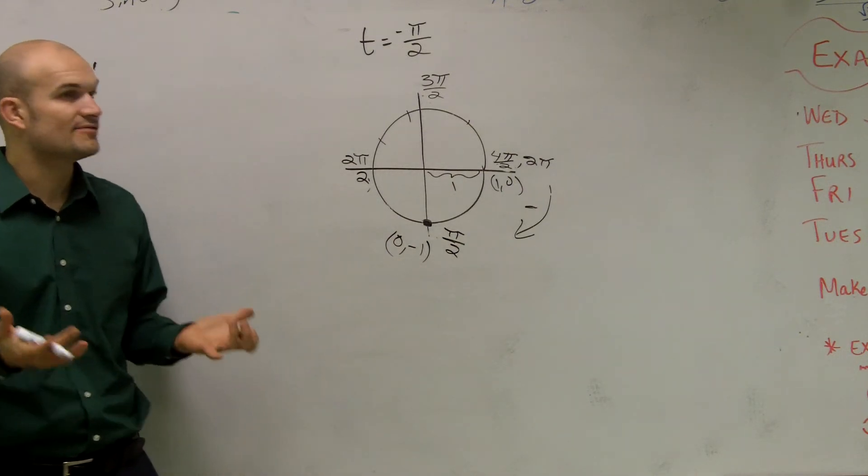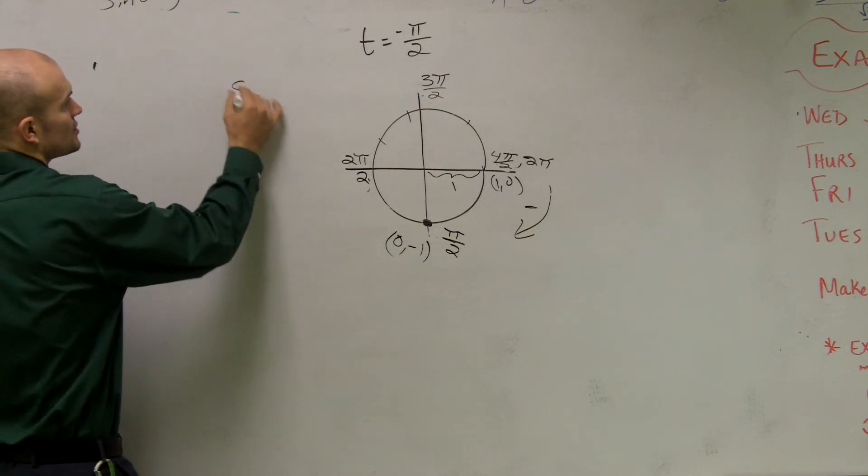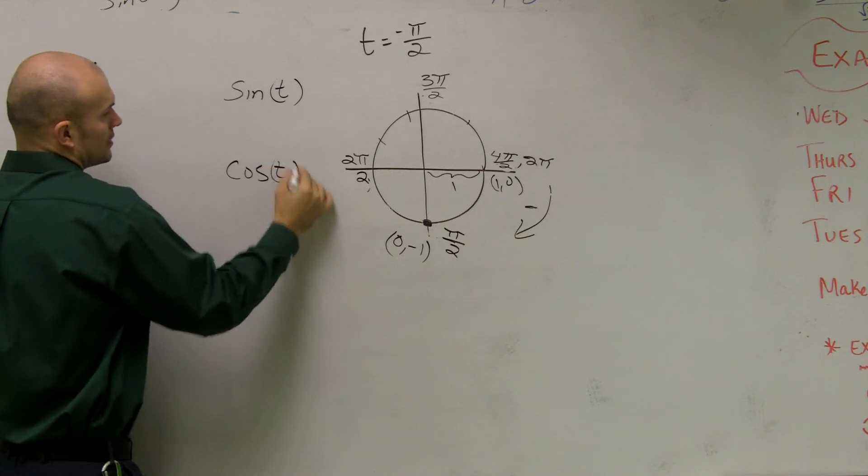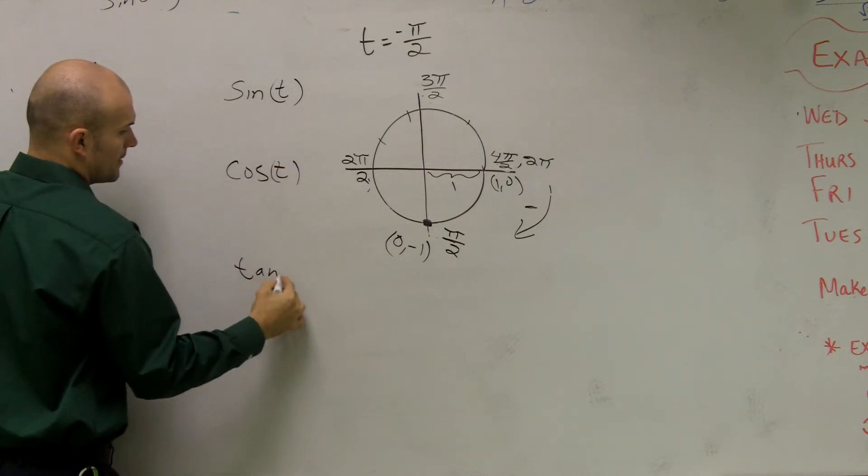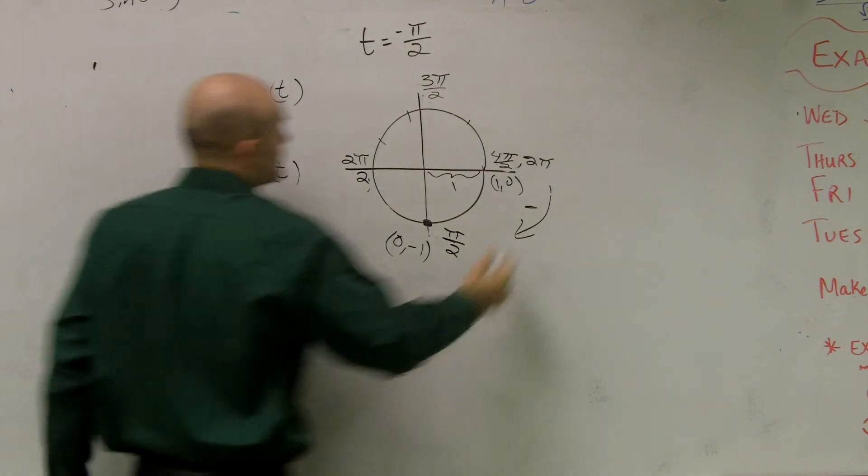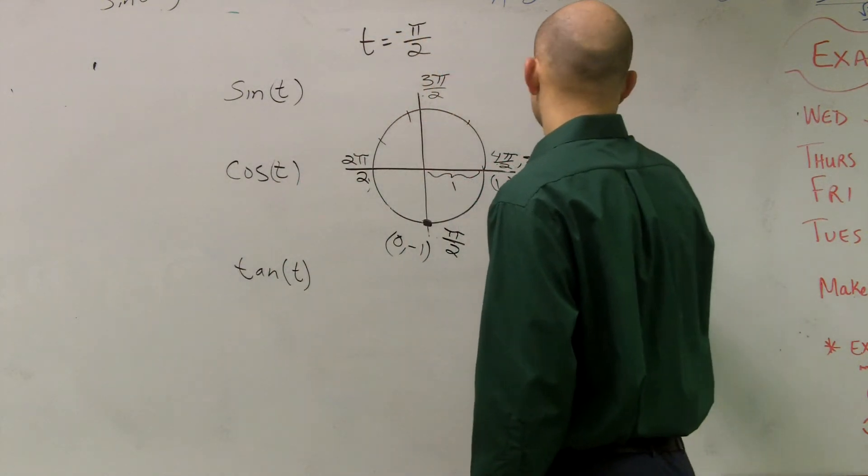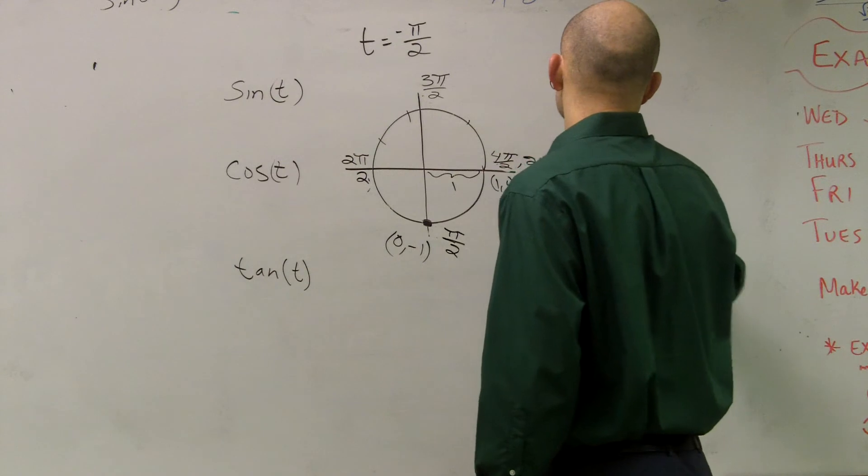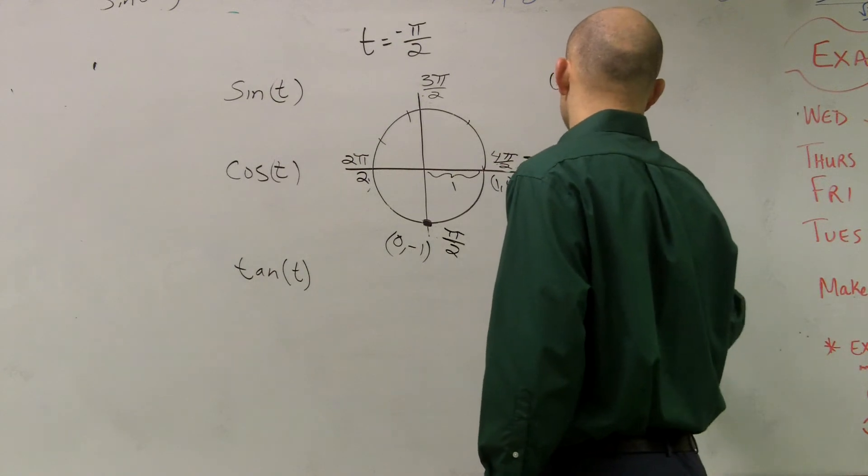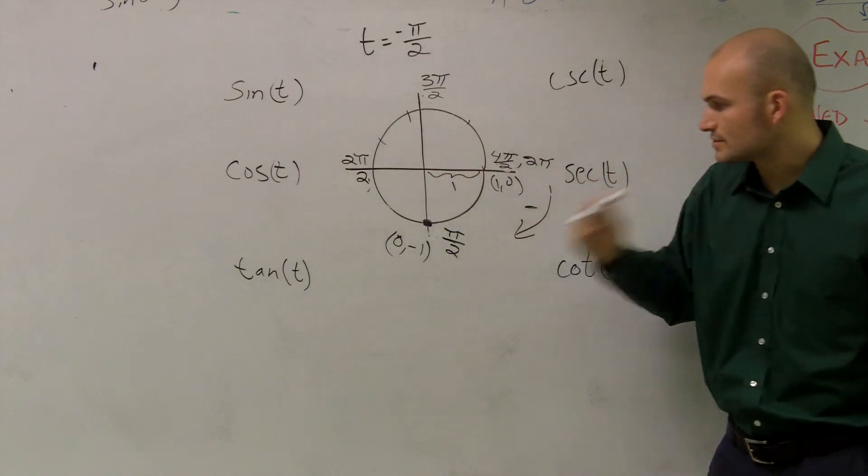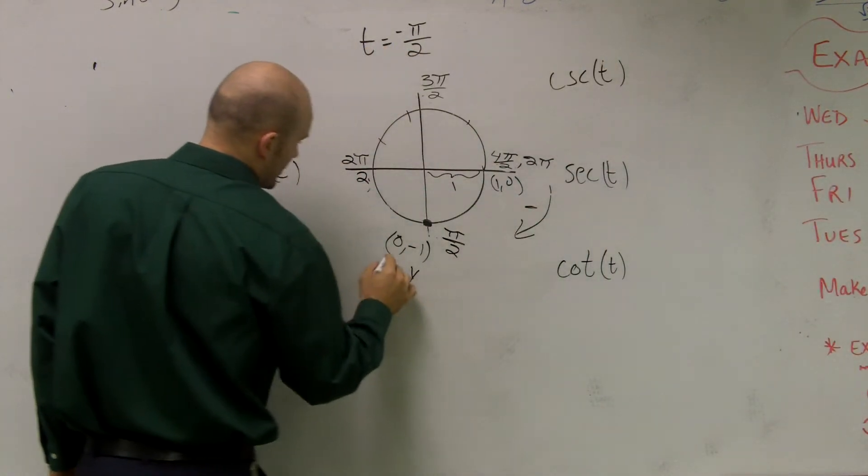So that asks us to find the six trig values. So we have sine of t, cosine of t, and tangent of t. Then we have cosecant of t, secant of t, and cotangent of t. So remember, each of our coordinates has an x and a y coordinate.